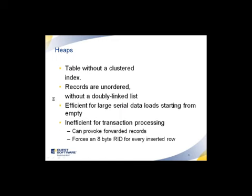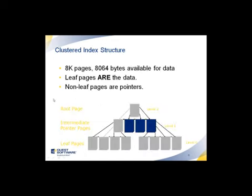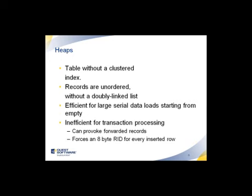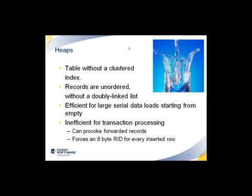Now we compare the clustered index — that's the physical order the data is arranged on the table — versus a table without any kind of clustering, which is called a heap. A heap is like pouring water into a glass: you don't specify where certain parts of that water go. You can't tell it to put all the light blue water here and all the dark red Kool-Aid there — it just all goes into the glass. So a heap is a table without a clustered index.